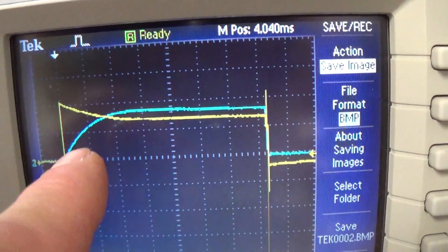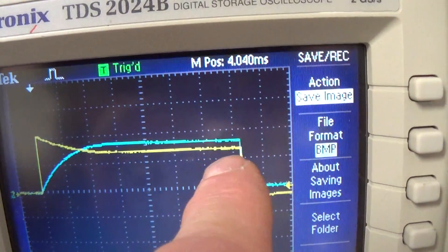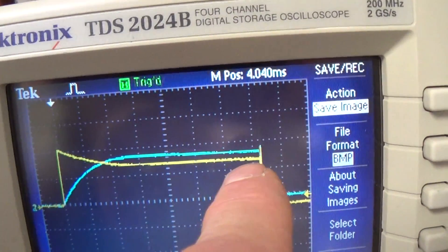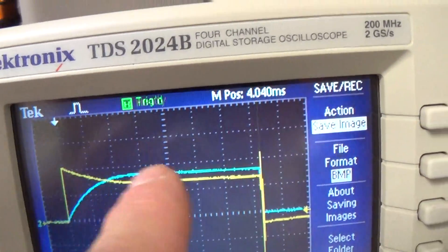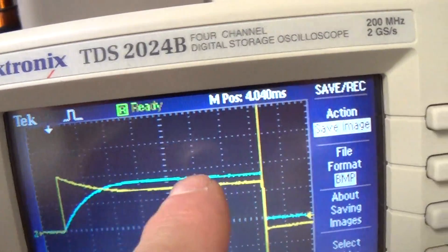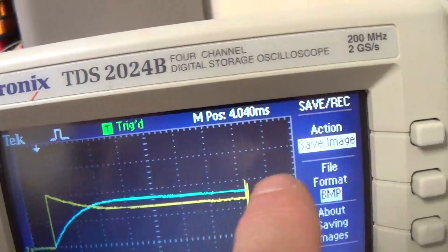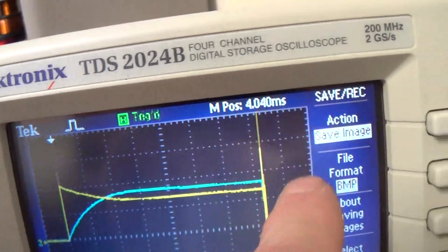So what the next test I will do is load down the rotation and see what happens with our current, which is the light blue trace. And the yellow trace is our voltage.